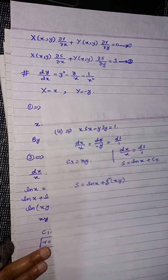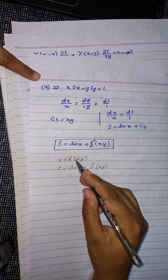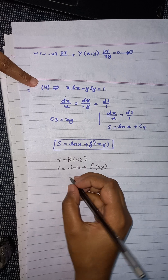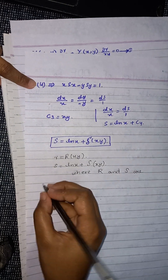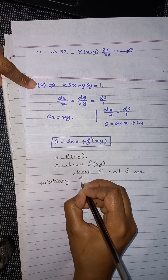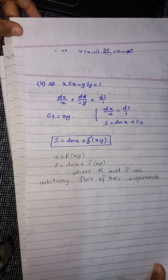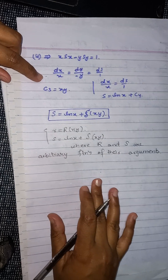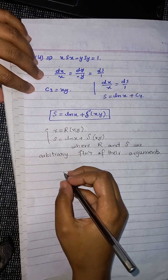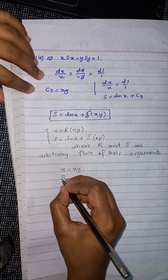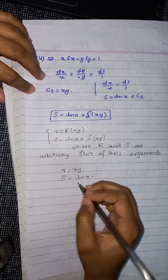We have now found the two transformation equations for r and s, where capital R and capital X are arbitrary functions of their arguments. From these transformations, if we take the value of capital R equal to one, we get r equal to x·y, and similarly s equal to ln(x).